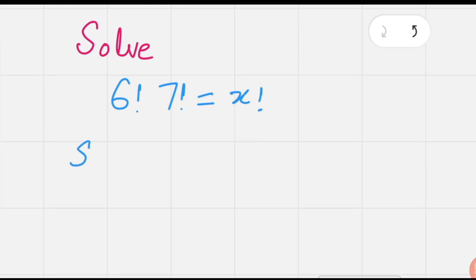Hi everyone, in this video we are going to solve a factorial equation for the value of x. That is 6 factorial times 7 factorial equals x factorial.